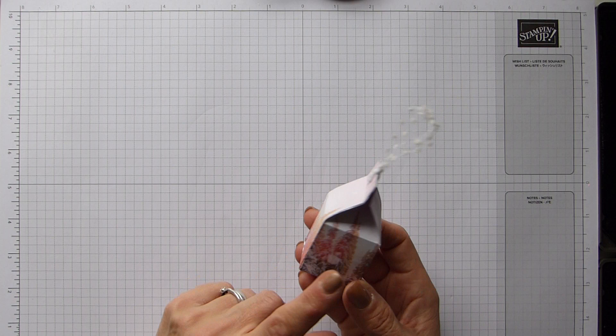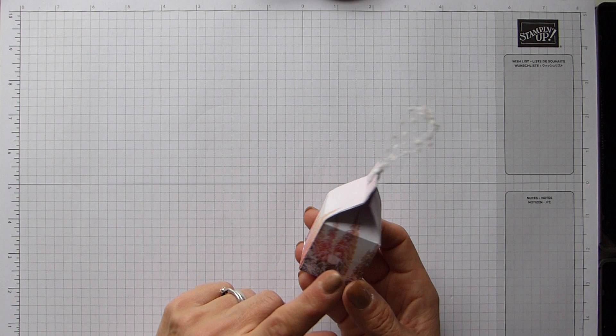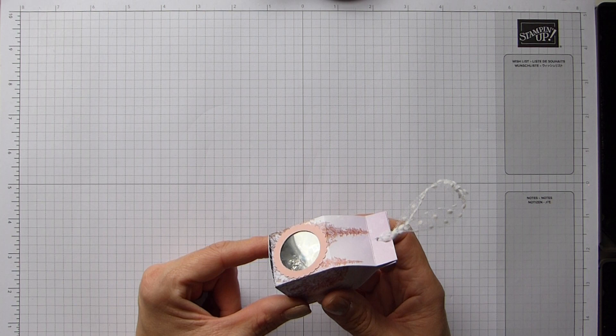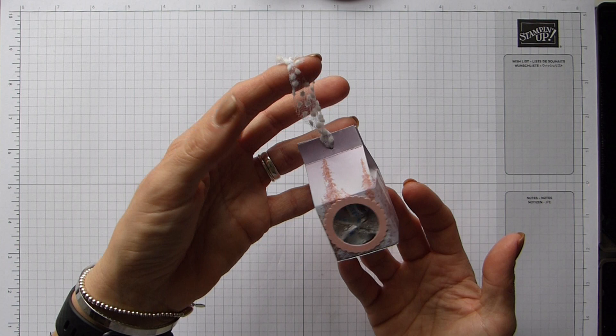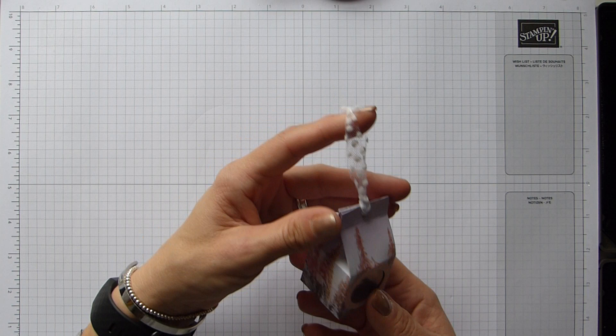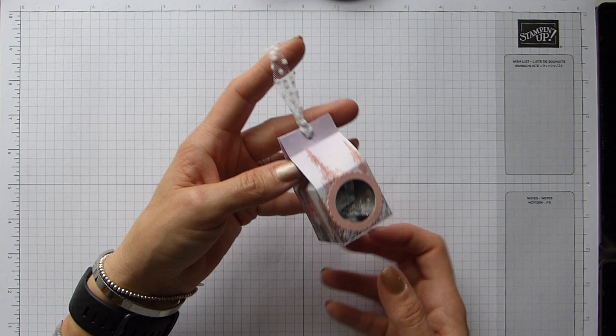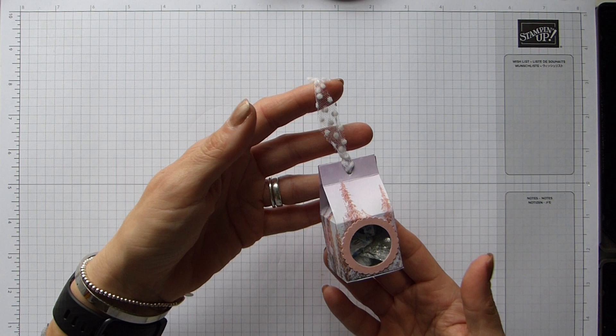Again still using the delightful Feels Like Frost, and this is the beautiful Feels Like Frost DSP that I just adore. It's a cute little hanging box. I did actually get the idea from Linda Parker, who is Papercraft with Crafty. She did one last year, I think it was with Christmas paper, but I really liked it and I just thought I want to have a go at making those and they are super cute.